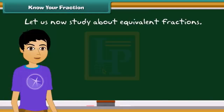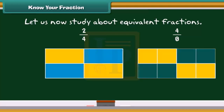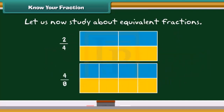Let us now study about equivalent fractions. Look at the rectangular boxes given below. In the first figure, two by four boxes are blue. While in the second figure, four by eight boxes are blue. Observe carefully — the blue colored parts of both the boxes are the same. This means two by four must be the same as four by eight. So, two by four and four by eight are equivalent fractions.